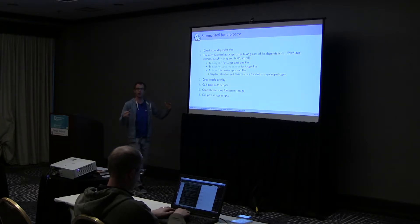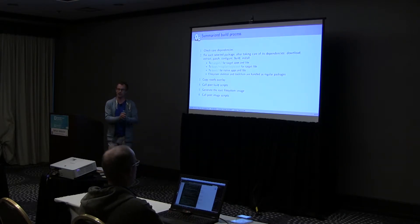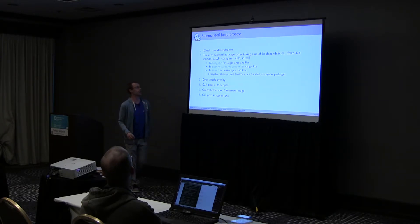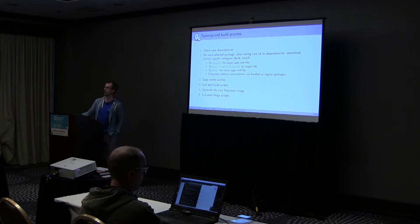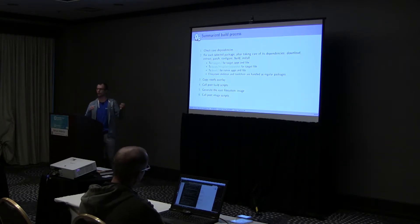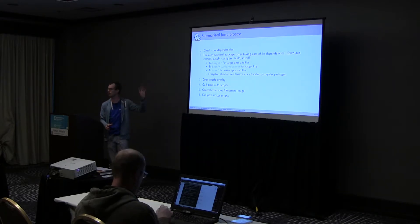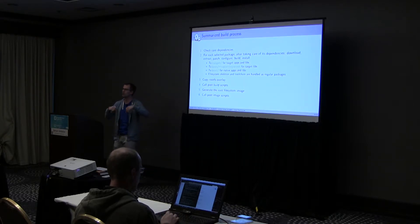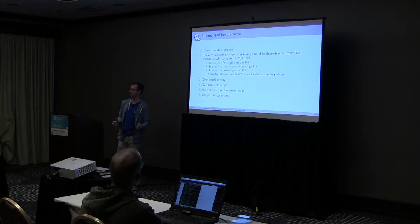At the end of building all packages, output/target is filled in with everything selected for the target, output/host has all native programs, and the sysroot has all headers and libraries. Then we enter the finalization step. First we copy what we call the rootfs overlay — a very basic principle where you want to customize your root filesystem by adding config files, scripts, or other things that didn't fit in any package. It's simply a folder that gets copied over the root filesystem at the very end of the build.